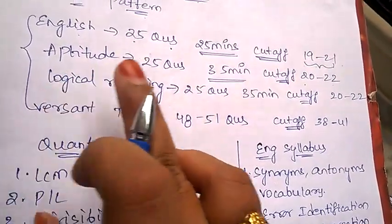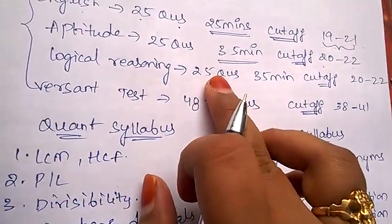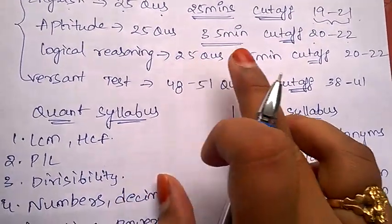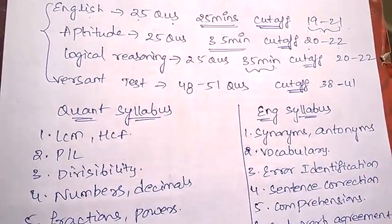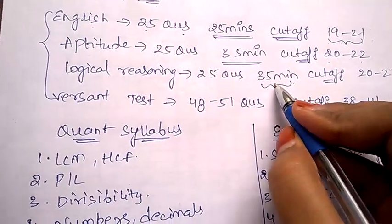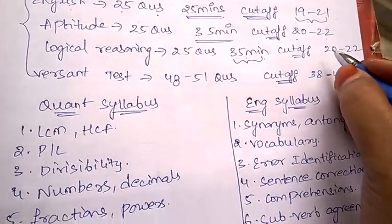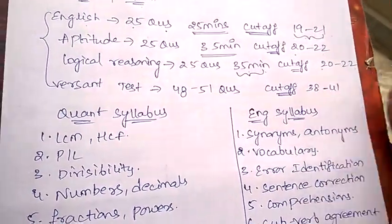Next, under logical reasoning they'll be asking you 25 questions and the time which they will give you to solve the logical reasoning questions is 35 minutes. The cutoff will be in between 20 to 22.